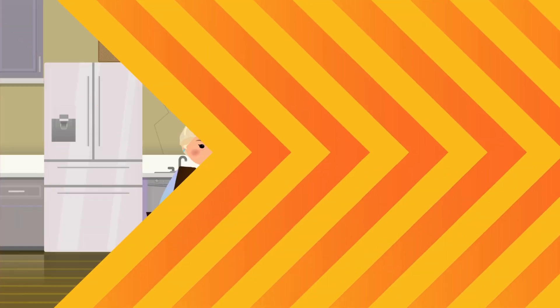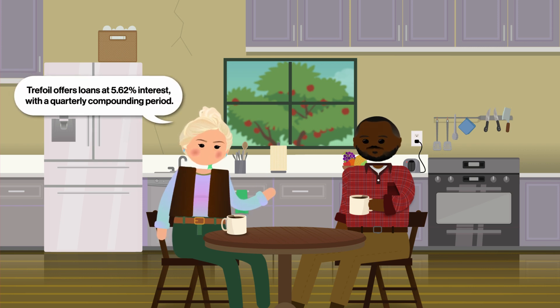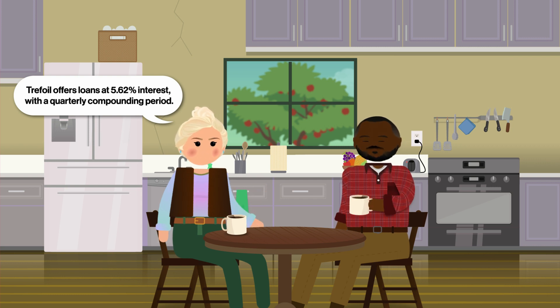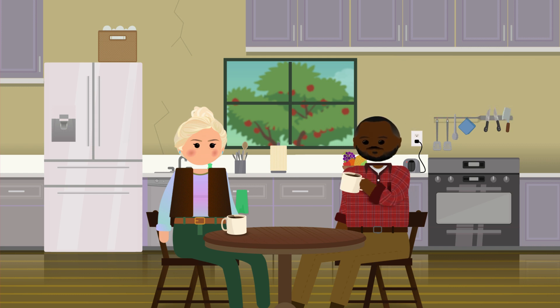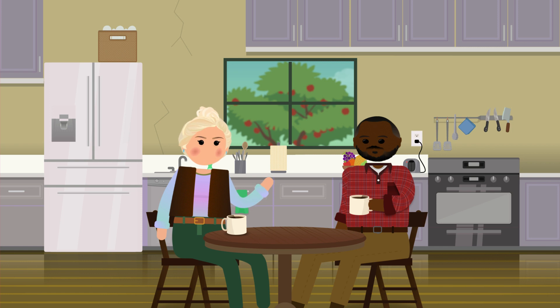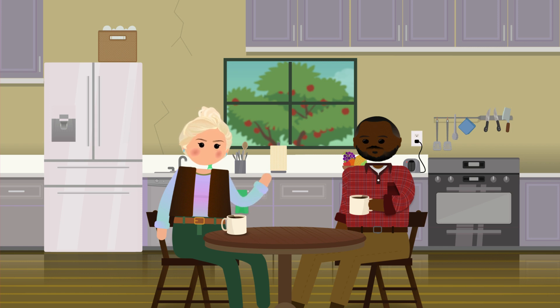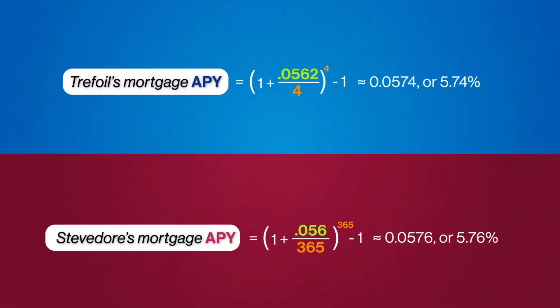The same logic applies for loans too — except when borrowing money, we usually want to pick the lowest APY we can. Like, 20 years from now, Alda and Brema might be looking to borrow money to renovate their kitchen. Trefoil offers loans at 5.62% interest with a quarterly compounding period, while Stevedore offers loans at 5.6% interest compounded daily. Although Stevedore has a lower annual interest rate, which seems appealing, it might not be the better deal. Using our formula, we find that Trefoil is actually the better option since it has a lower APY.